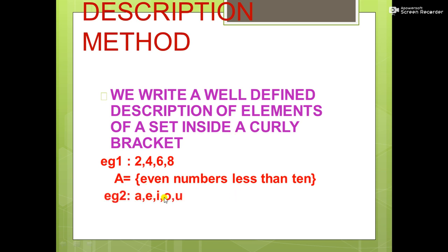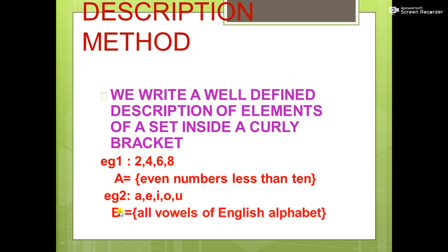Next example using the description method: a, e, i, o, u — how will we represent this? B = {all vowels of the English alphabet}. Hope it is clear.